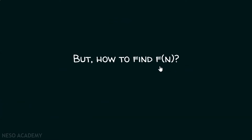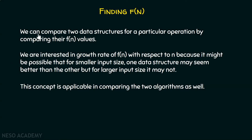But how to find f(n)? Finding f(n) in small programs is easy, but as programs become more complex, it is not that easy. We can compare two data structures for a particular operation by comparing their f(n) values. We are interested in the growth rate of f(n) with respect to n, because for smaller input size, one data structure may seem better than the other, but for larger input size, it may not.